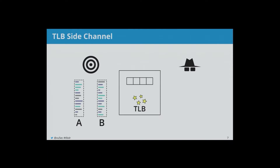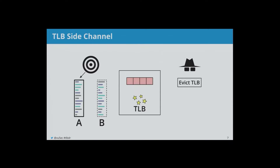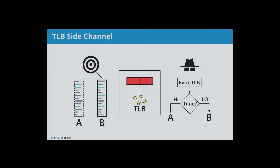Let's look at an example. Say our target has two possible code paths. On code path A, it accesses a particular memory address, loading or hitting an entry in the TLB. On code path B, it doesn't. What an attacker does is evict the TLB and time accesses. If the target went on code path A, it would hit that entry and the attacker measures a higher access time. If it went on code path B, the attacker just hits their own entries and gets a low time.